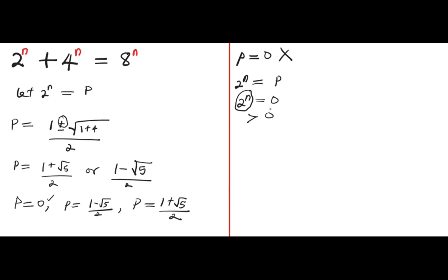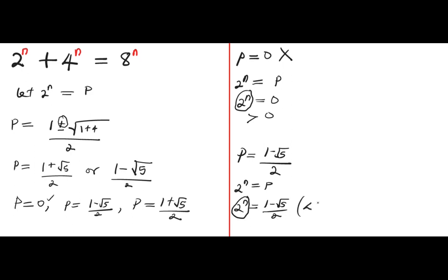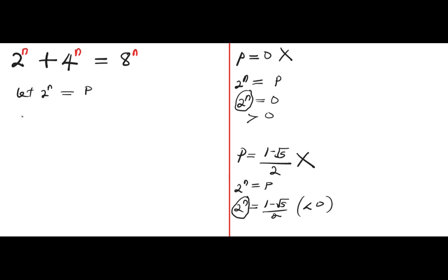We also consider p equals 1 minus root 5 divided by 2. Setting 2 to the power of n equal to 1 minus root 5 divided by 2, this value is actually less than 0 — it gives a negative number. There is no way 2 to the power of n can give a negative number, so p cannot equal 1 minus root 5 divided by 2 either. That leaves p equals 1 plus root 5 divided by 2, which is greater than 0 and satisfies the condition.